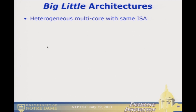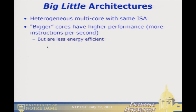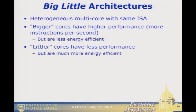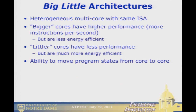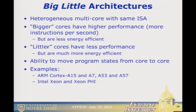Big-little architectures are heterogeneous in microarchitecture versus ISA. Bigger cores have higher performance but poor energy efficiency; littler cores are more energy efficient. In many cases, program state can move from a big core to a little core as needed. ARM has several examples of such pairs. And if you look at the Xeon and the Xeon Phi, that's at least marching down this kind of road.